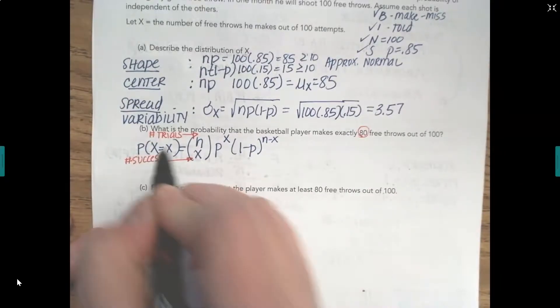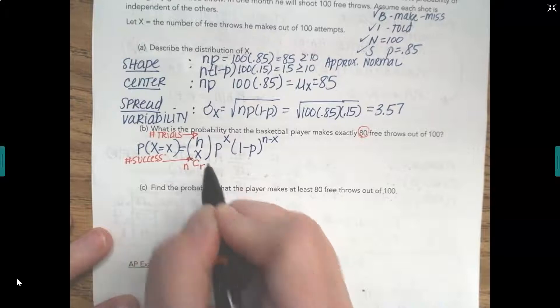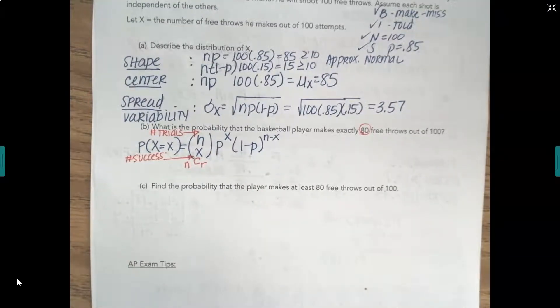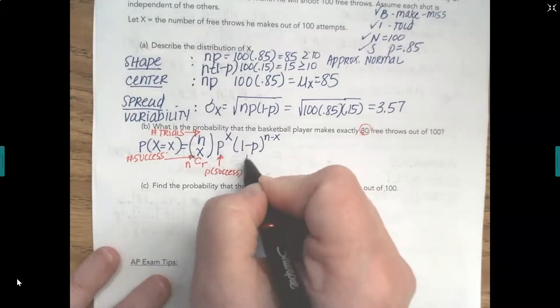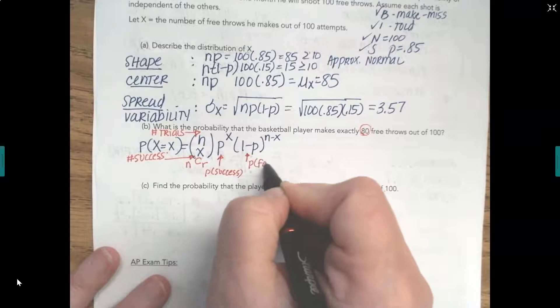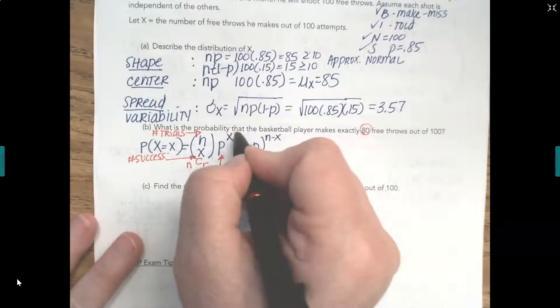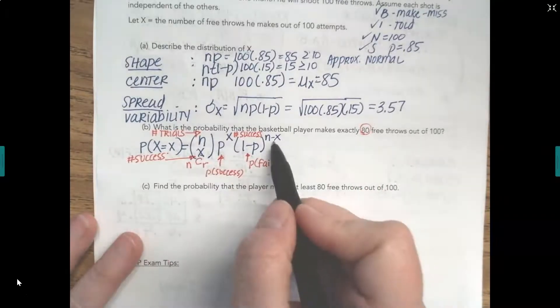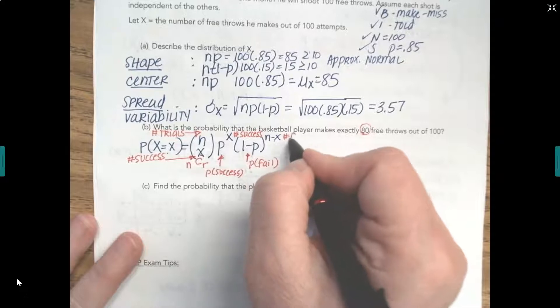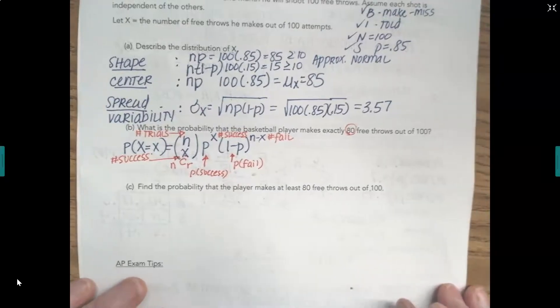This is not a fraction. This is actually a combination that we were calculating in our calculator using NCR under our probability button. P is the probability of success. 1 minus p is the probability of failure. Then we have our exponents. x is the number of successes, so this number gets used again, and N minus x is the number of failures.